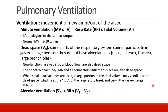Not all of the air that goes in and out of the lungs is helpful, because some of it is in the dead space. Dead space consists of parts of the respiratory system that can't participate in gas exchange because they don't have alveolar cells — including the nose, mouth, pharynx, trachea, and large bronchioles. Additionally, non-functioning alveoli with poor blood flow constitute alveolar dead space, and any plastic or rubber parts such as the endotracheal tube, LMA, or connectors up to the Y piece are also dead space.